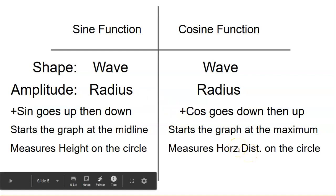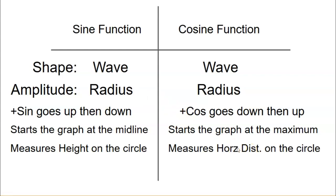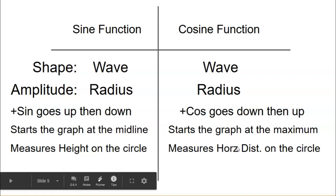In terms of context, sine measures the height on the circle as you spin around it — how far above or below the midline you are. Cosine, on the other hand, measures horizontal distance — how far to the right or left you are, as opposed to how far above or below the center. That is the real contextual difference between the two functions.